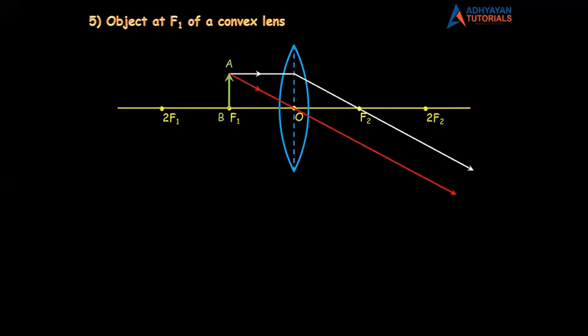This diagram is an incomplete diagram, but it has a complete understanding. Now, we drew diagram number 1 — object at infinity. When the object was at infinity, the rays of light came parallel. Now look here — the rays of light are going parallel. So where will the image become? Definitely the image will be formed at infinity. And that's why the position of the image is at infinity.